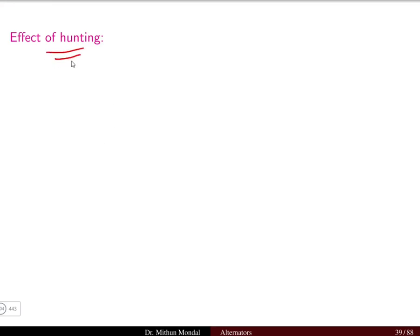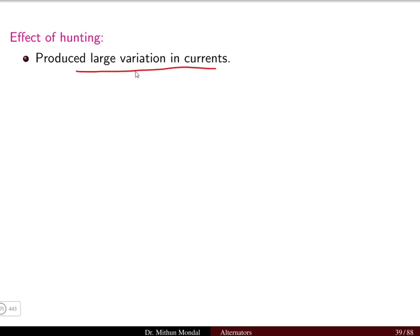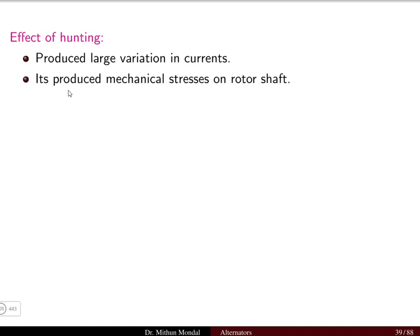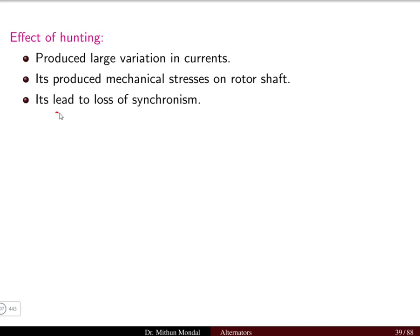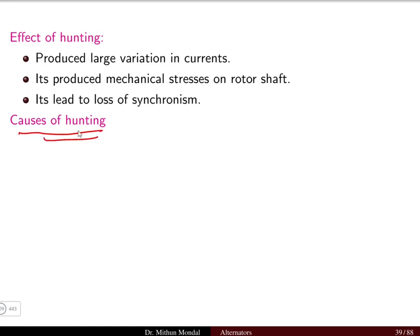Hunting is basically the oscillation of the rotor about the equilibrium position due to sudden change in the load. The effects of hunting are: first, it produces large variation in the current in the armature winding. Second, it produces mechanical stress on the rotor shaft. Third, it leads to loss of synchronism — the synchronous machine running at synchronous speed with magnetic locking between rotor and stator magnetic field will lose synchronism due to hunting.